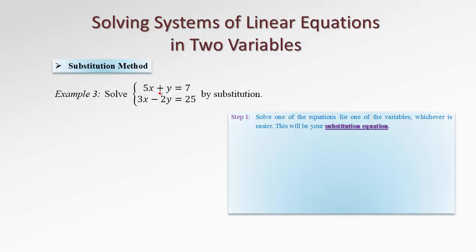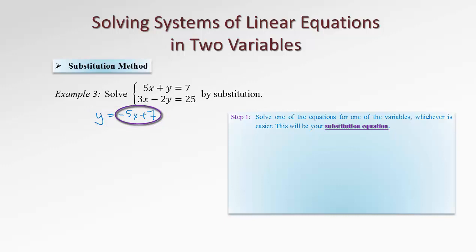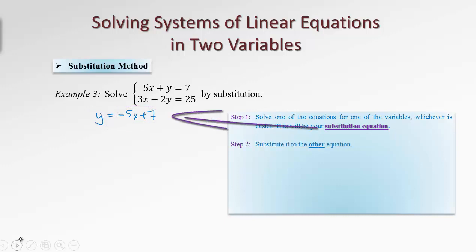So it's easier to work with denominator 2 than denominator 3 or 5. Therefore, in this example, I would choose to solve the first equation for y. We have y equals — bring the 5x to the right — so it will be negative 5x plus 7. We are going to refer to this as the substitution equation. So the expression negative 5x plus 7 is our substitution expression.